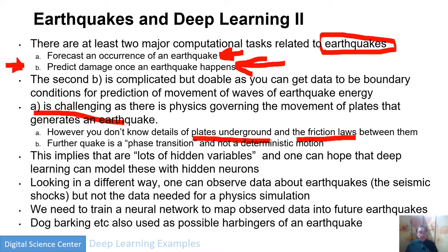If you think about this as a problem, there are a lot of hidden variables, because we don't have enough data to compute it as an ab initio simulation. That makes deep learning sound attractive, because it is full of hidden neurons. The idea is that whatever the data is, it's the same data that produces all earthquakes. So if you have a whole bunch of earthquakes and you train the network on them, then somehow it has learned implicitly about the data — the friction loss between the faults — and therefore can be used to predict new earthquakes if you have enough data.